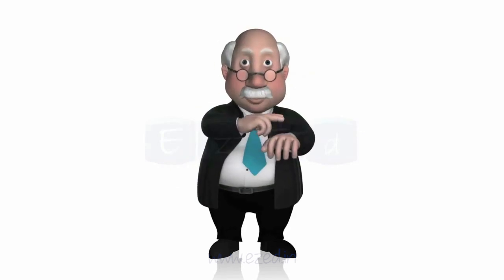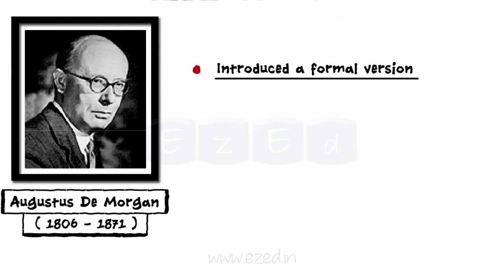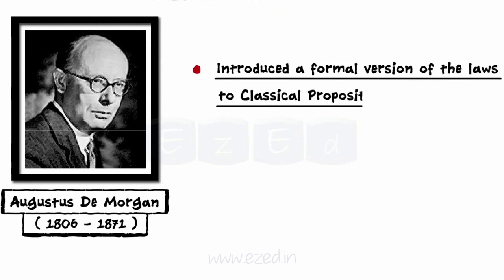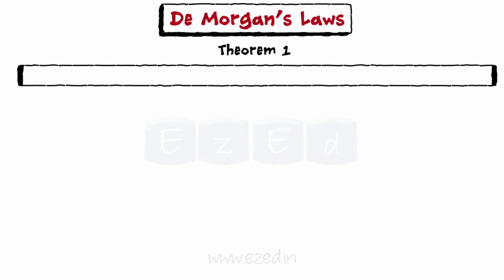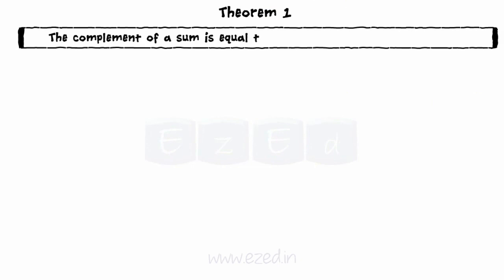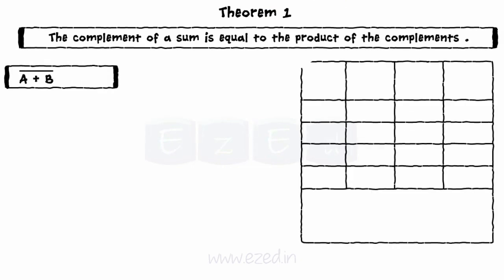Let's study De Morgan's laws. The law is named after Augustus De Morgan, who introduced a formal version of the laws to classical propositional logic. The statement of theorem 1 is: the complement of a sum is equal to the product of the complements. That is, (a plus b) bar equals a bar dot b bar.